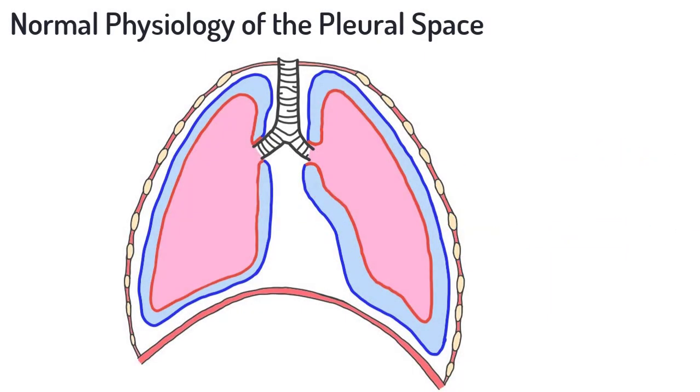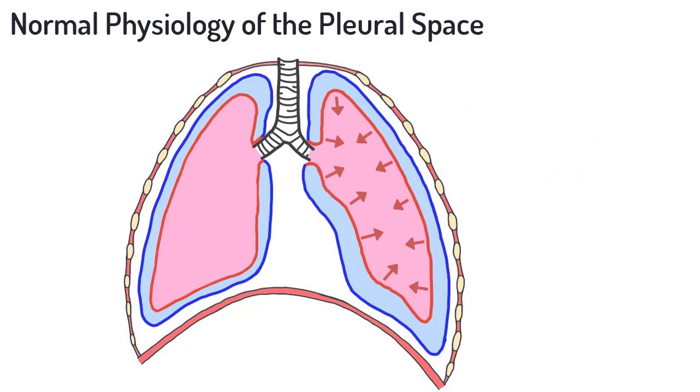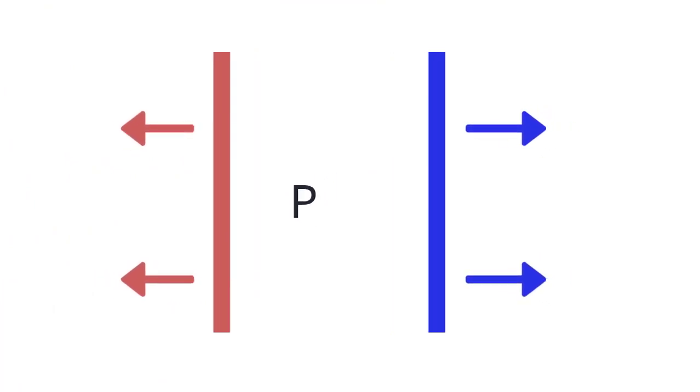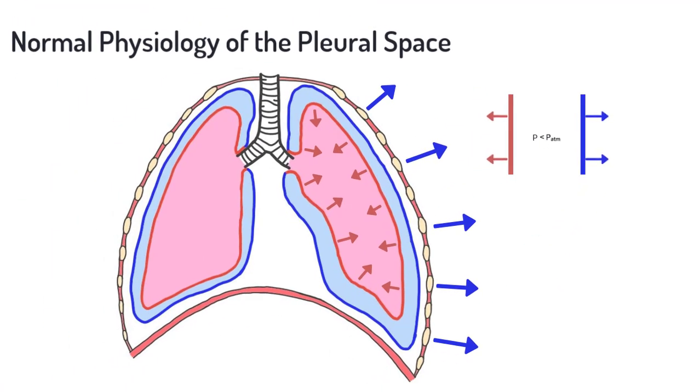Note that the lungs have a natural tendency to collapse inward and bring the visceral pleura with them. Conversely, the chest wall has a natural tendency to recoil outward, which would drag the parietal pleura with it. Thus, we see that the two layers of pleura are being pulled in opposite directions. These forces work to slightly expand the pleural space, causing a drop in pressure within the pleural space. This is similar to the partial vacuum created by pulling backwards on the plunger of a syringe. This sub-atmospheric pressure within the pleural space is responsible for keeping the lungs expanded and preventing their collapse.